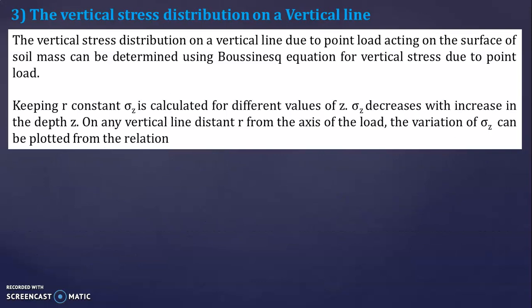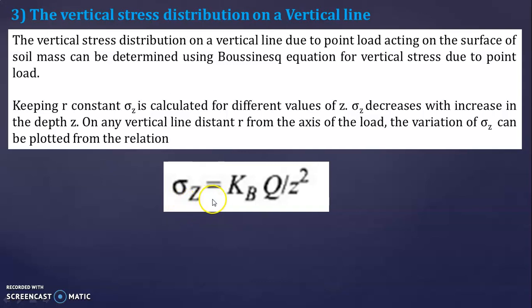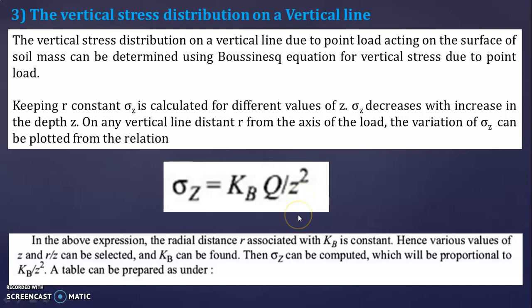Keeping R constant, sigma Z is calculated for different values of Z. Sigma Z decreases with increase in the depth Z. On any vertical line distant R from the axis of the load, the variation of sigma Z can be plotted from the relation: sigma Z equals KB times Q divided by Z squared. In this equation, the radial distance R associated with KB is constant.